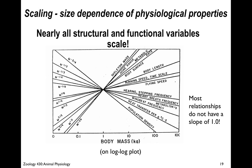Size, scaling, and the size-dependence of physiological properties is hugely important — nearly every structural and functional variable scales. Skeleton mass is close to isometry, as is home range size, but body length and running speed don't scale isometrically. Heart rate and breath frequency are directly related to metabolism, and even population density changes in interesting ways with mass. Most relationships in physiology do not have a slope of 1.0, so size is really central to physiology. Take care, bye-bye.